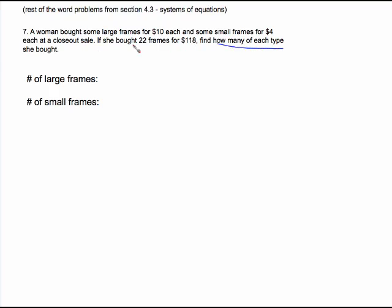How many of each type she bought is what we're looking for. So that's going to be our naming of the variable. I'm going to call L the number of large frames and S the number of small frames. We need to put this information together. One is the fact that she bought a total of 22 frames. The 22 frames are made up of some large and some small. So one equation is just L plus S equals 22.